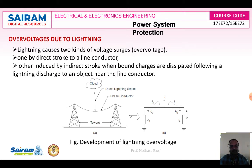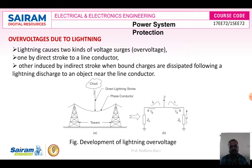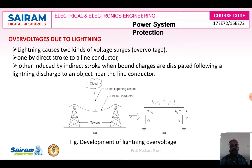Why does overvoltage occur in our system? Lightning causes mainly two kinds of voltage surges or overvoltages. One is a direct stroke to a line conductor, and the other is induced by an indirect stroke. These are the two reasons overvoltage occurs in a power system — a direct stroke to a line conductor and indirect stroke.